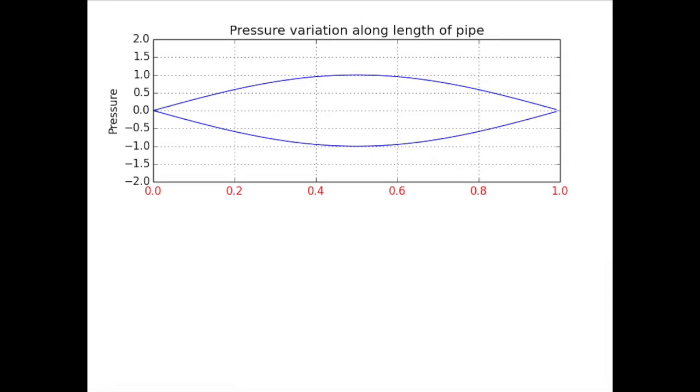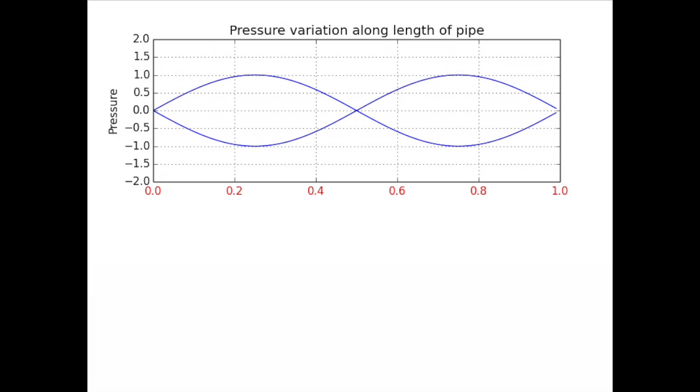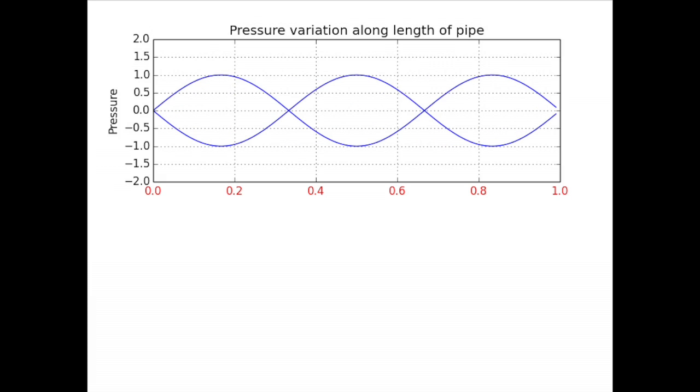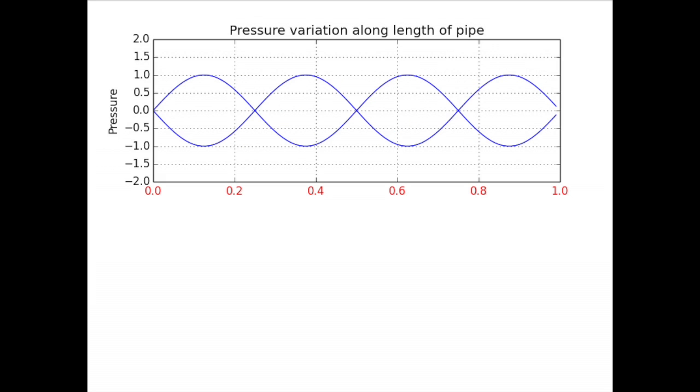We will first find the modes of an open pipe. For certain frequencies, the wave traveling down the pipe adds constructively to the wave reflected from the end of the pipe, thus creating standing waves, which is also called resonance.